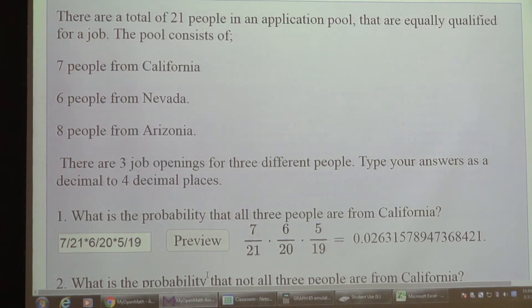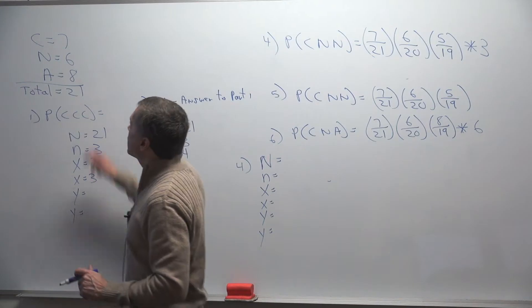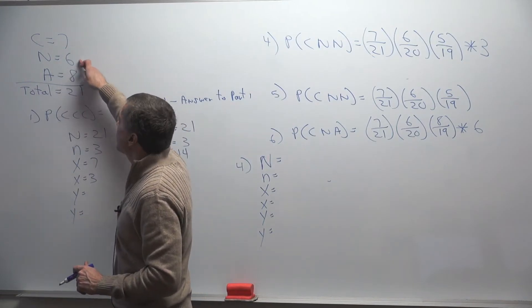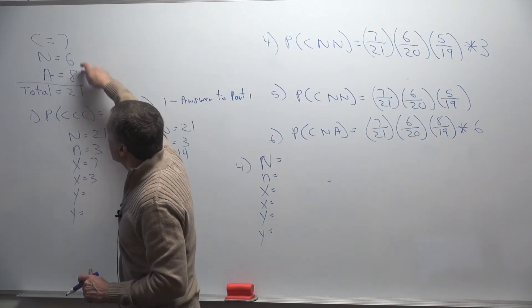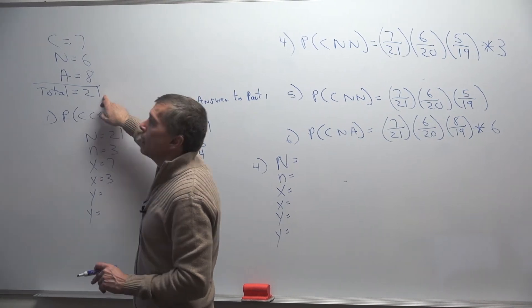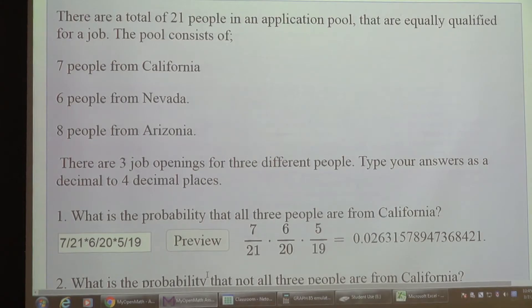On this problem, there are 21 people in an application pool that are equally qualified for a job. The pool consists of seven people from California, six from Nevada, and eight from Arizona.